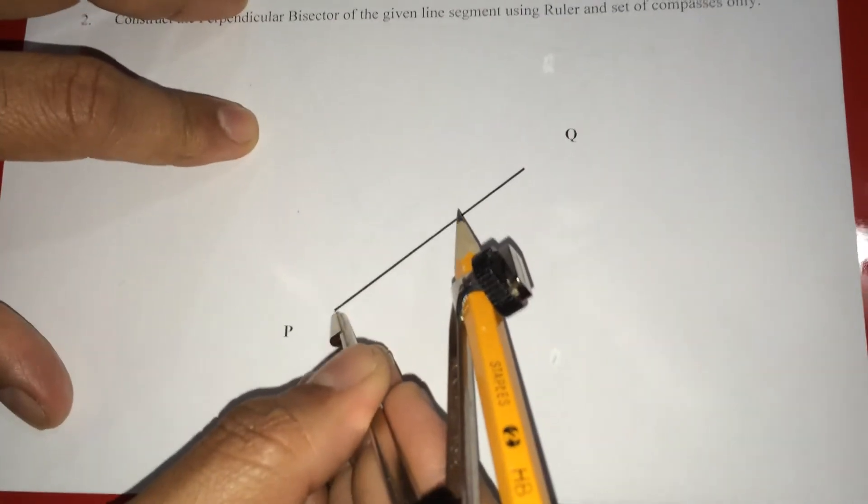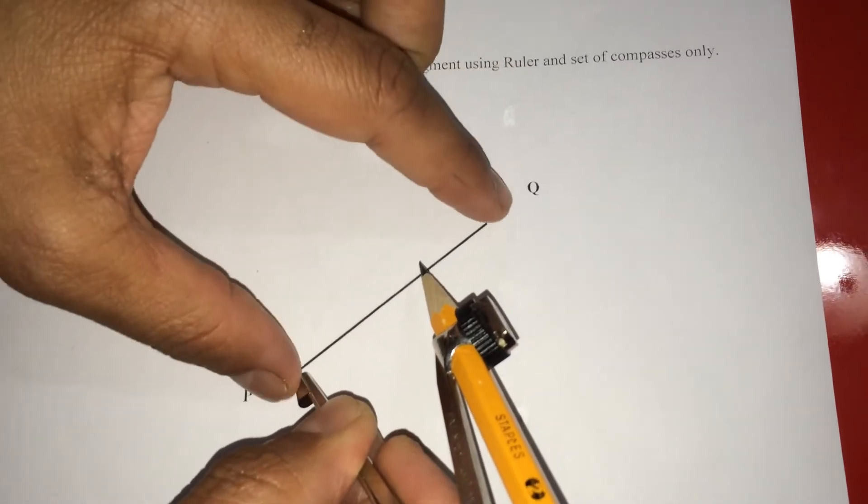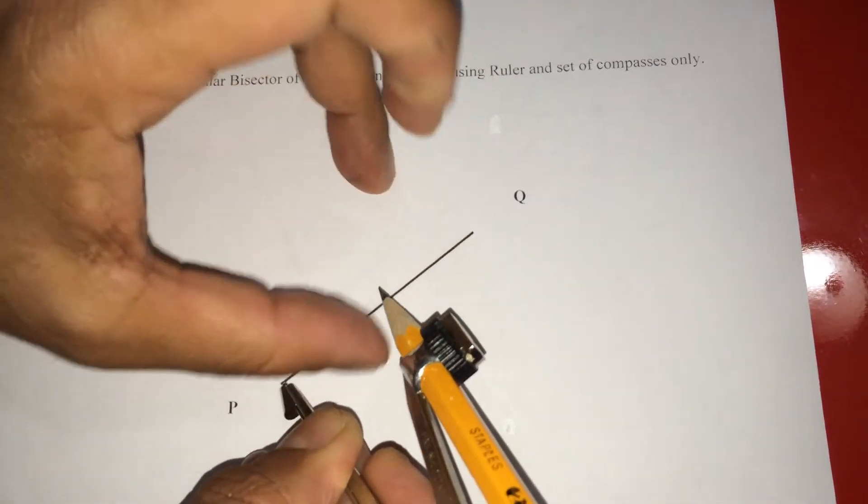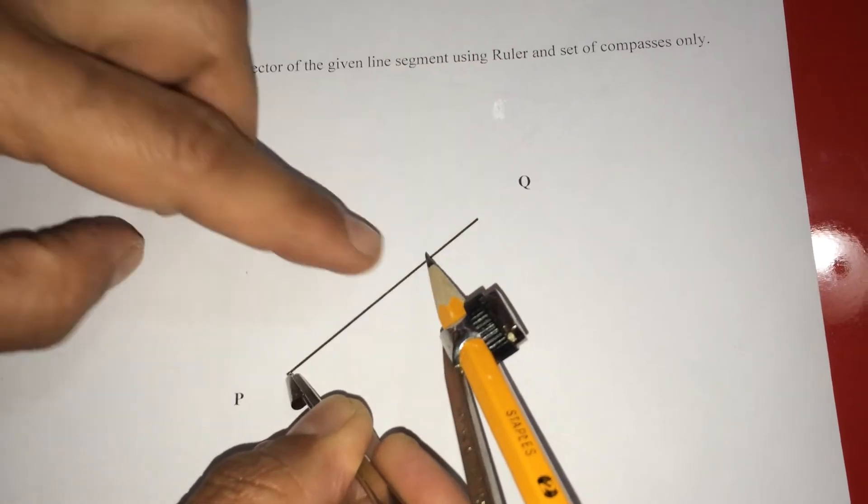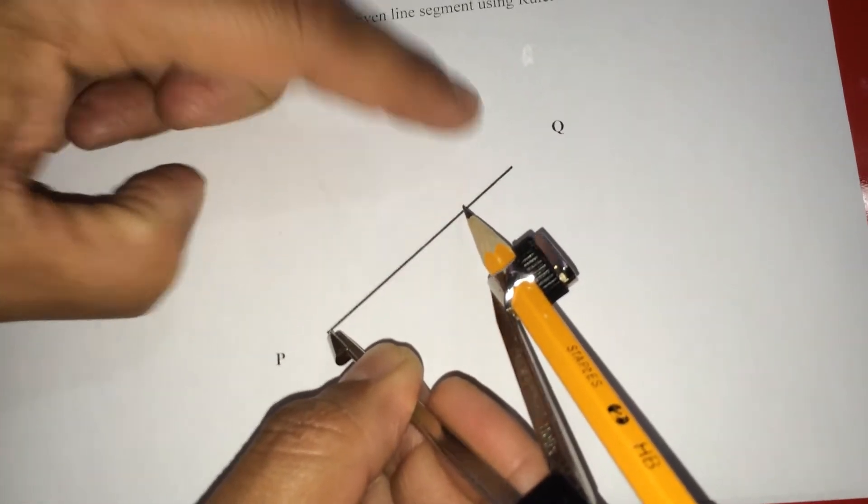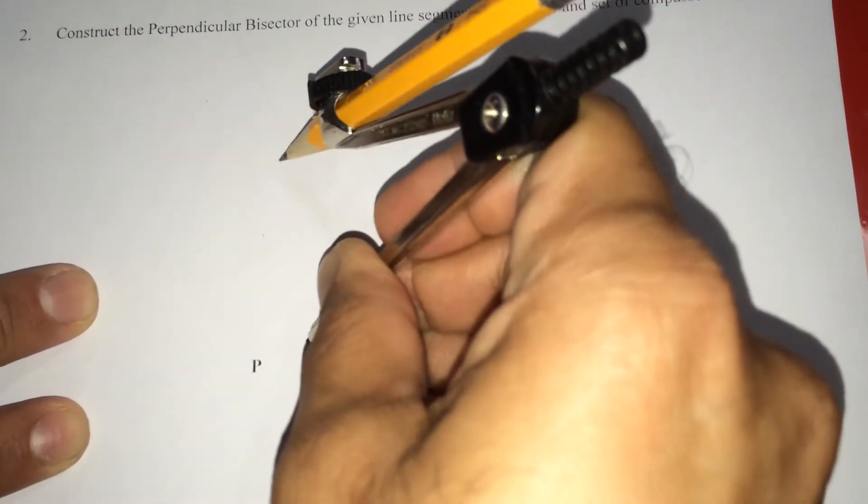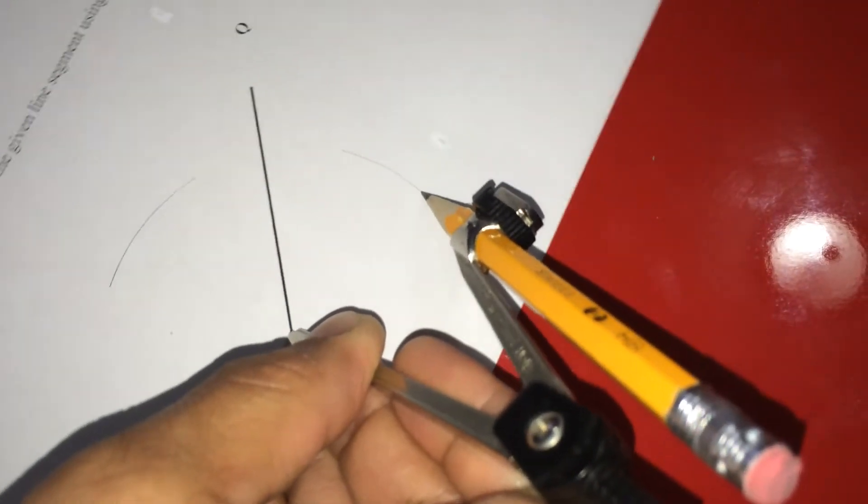And this radius is, this is full and this is half. I am taking more than half like this. So this radius is less than full and more than half. Like that if you take P as center, draw an arc this side and draw on the other side.